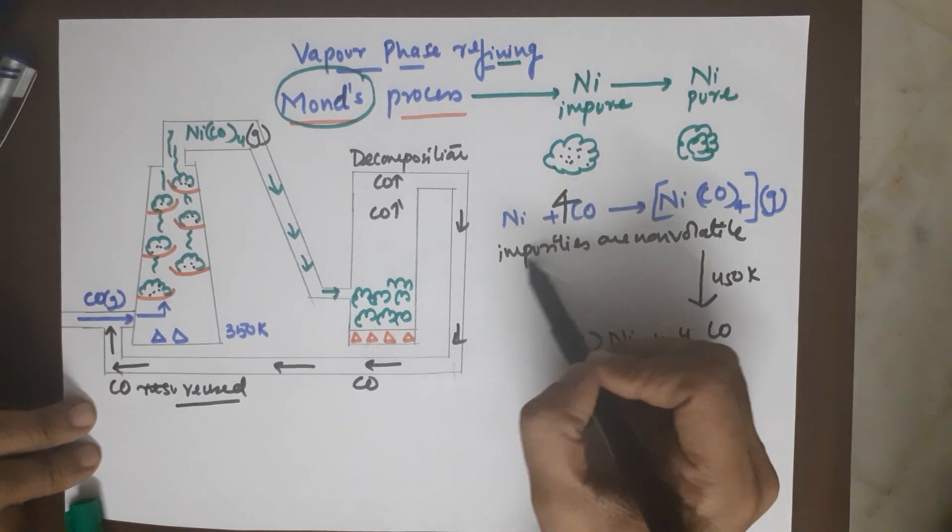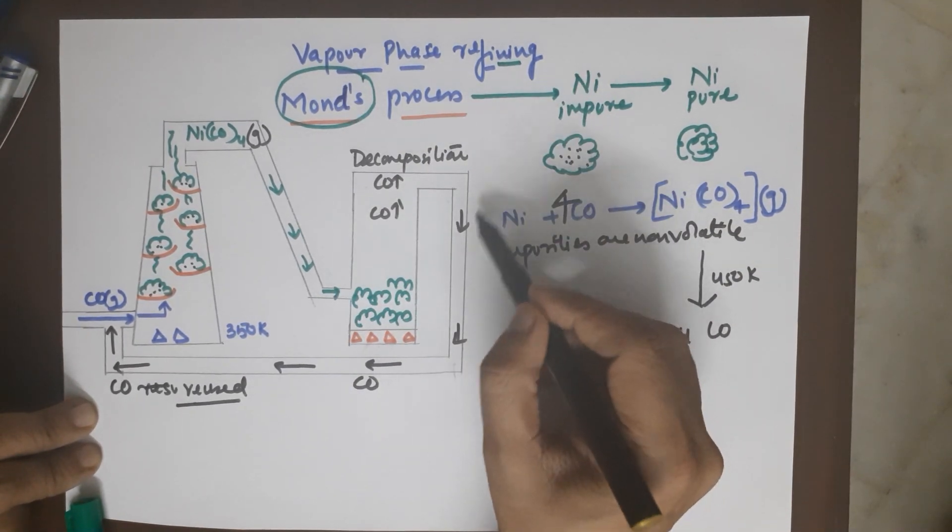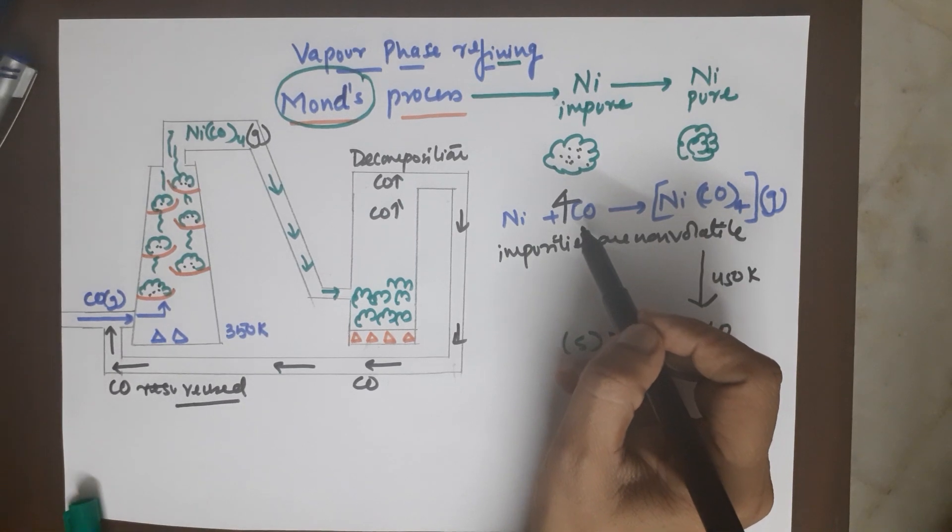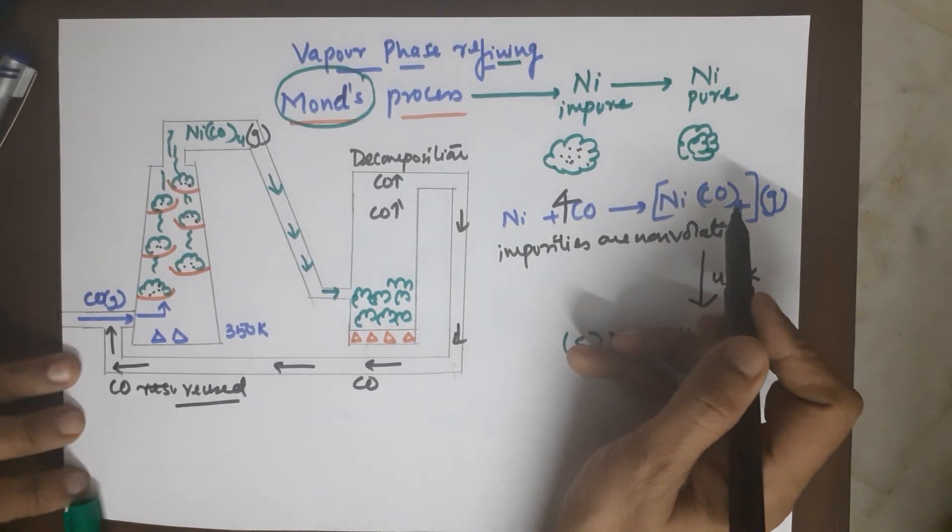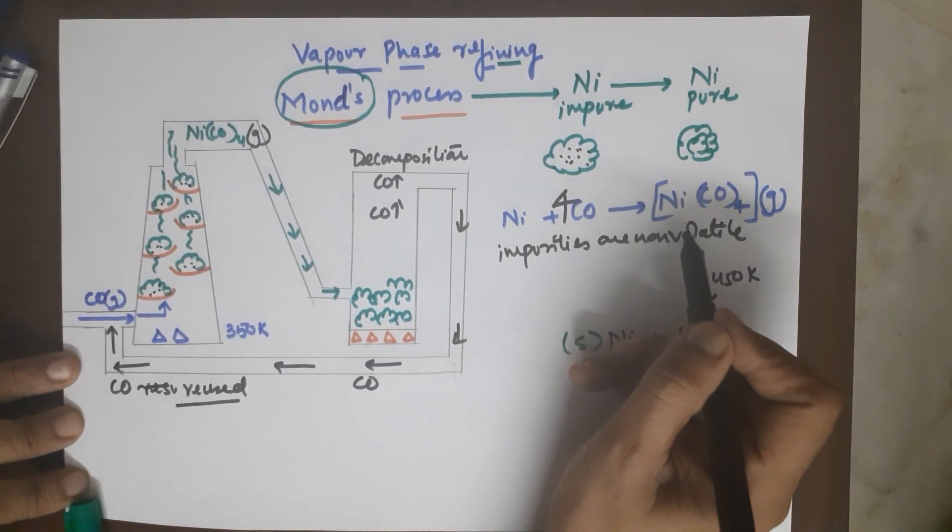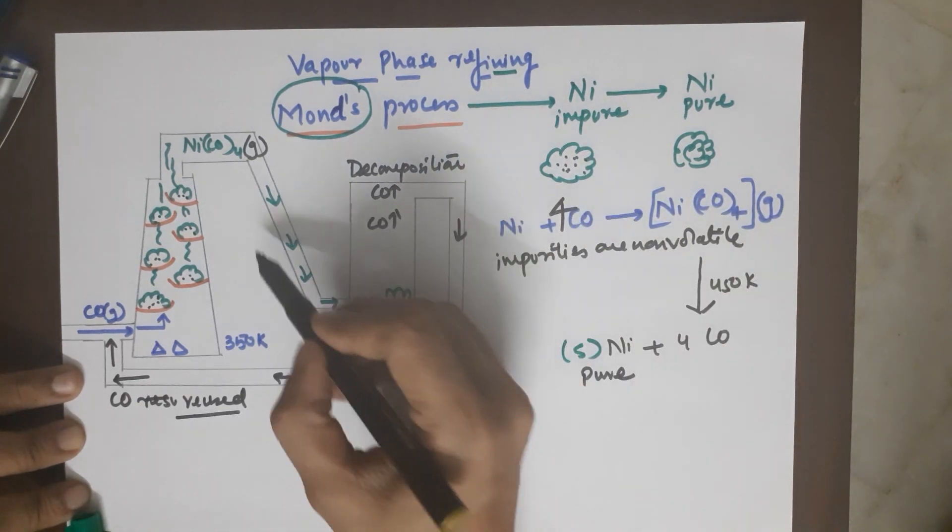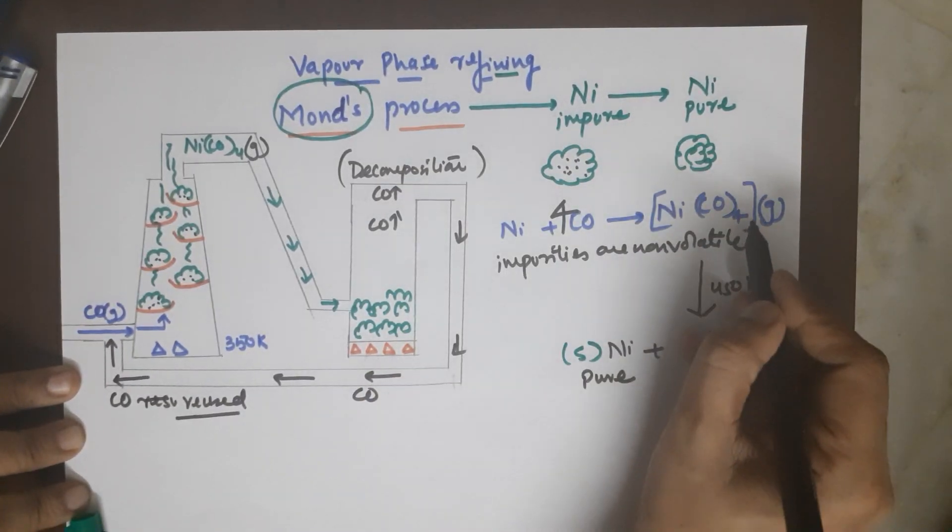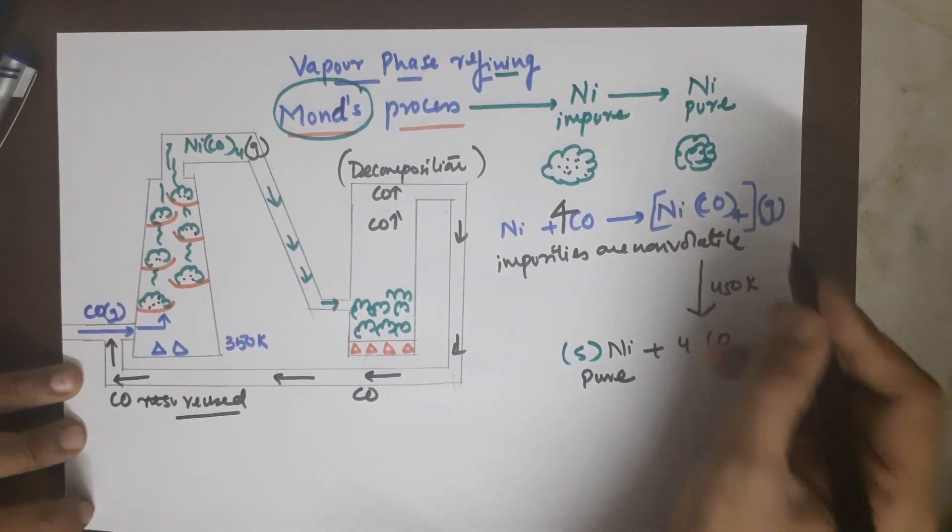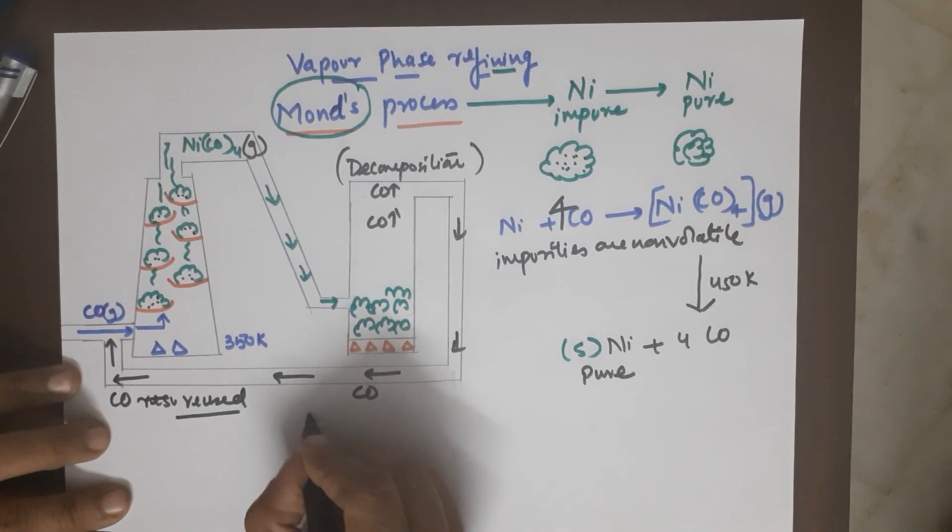So the agenda is you first take the impure metal. This process is only for nickel. Your impure nickel will first react with the reagent which leads to a volatile compound. Impurities should be non-volatile so that this compound travels into the decomposition chamber where this compound has to break.